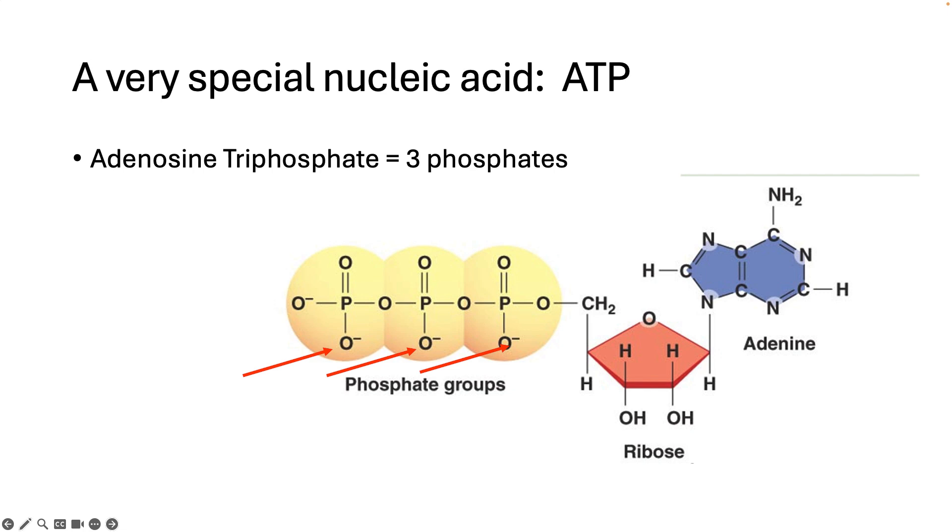This means that in order to hold them next to each other, the covalent bonds that are holding them together have to be really strong. And when we talk about strong bonds, we're talking about high energy. We need a lot of energy to hold them together. The very last phosphate is held on by a bond that is really, really strong. When this bond is broken, it releases a lot of energy, and the cell can use that energy to do work.